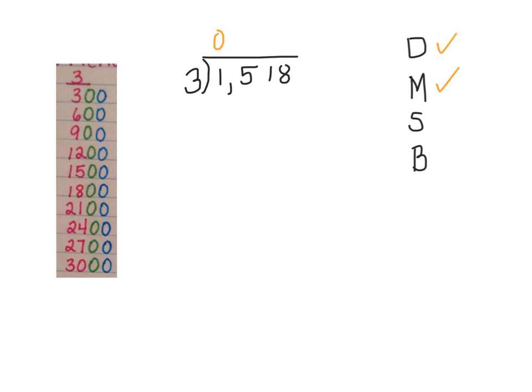Then I'm going to multiply. 0 times 3 is 0, because 0 times anything is 0. Then I subtract, and then I bring down the next digit, which is 5. After I bring down, I know that I'm ready to start my process over again up at the top with dividing. And I always divide from what was brought down.